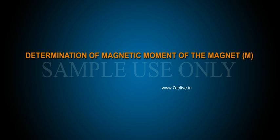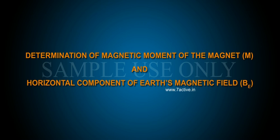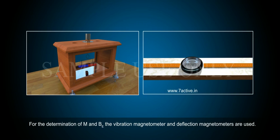Determination of magnetic moment of the magnet M and horizontal component of the Earth's magnetic field BE: For the determination of M and BE, the vibration magnetometer and deflection magnetometers are used.